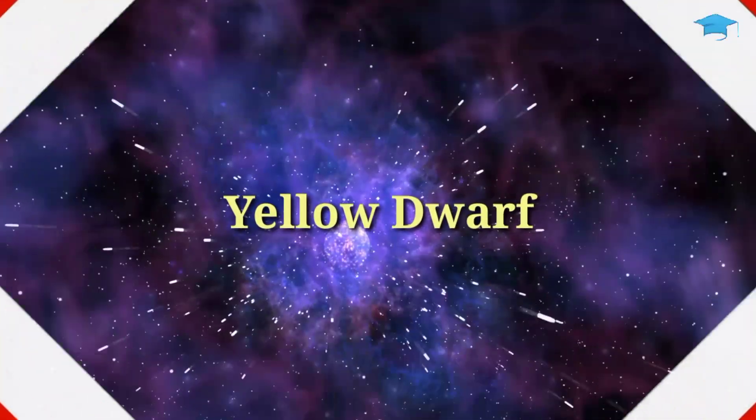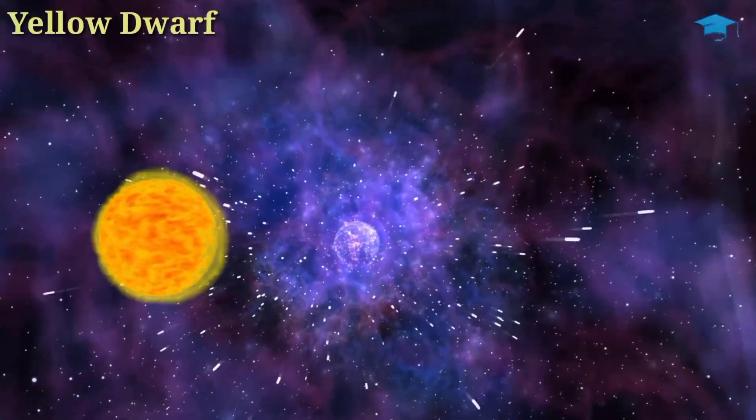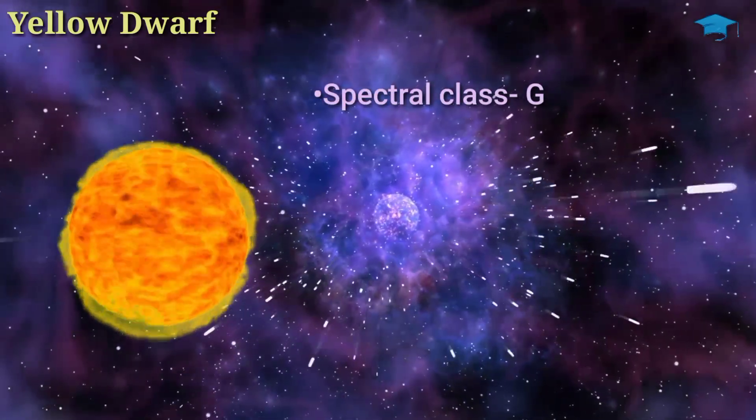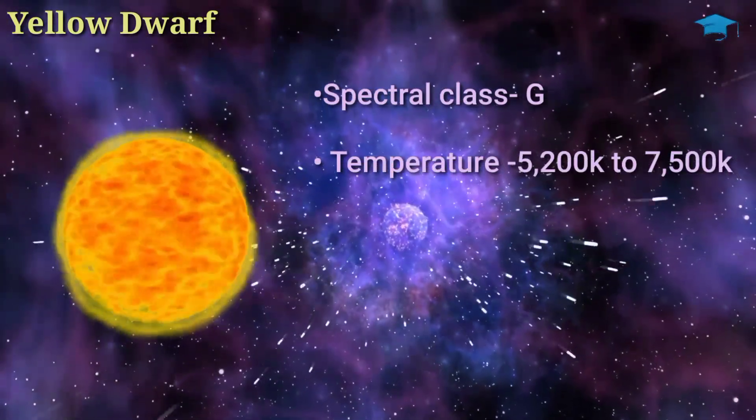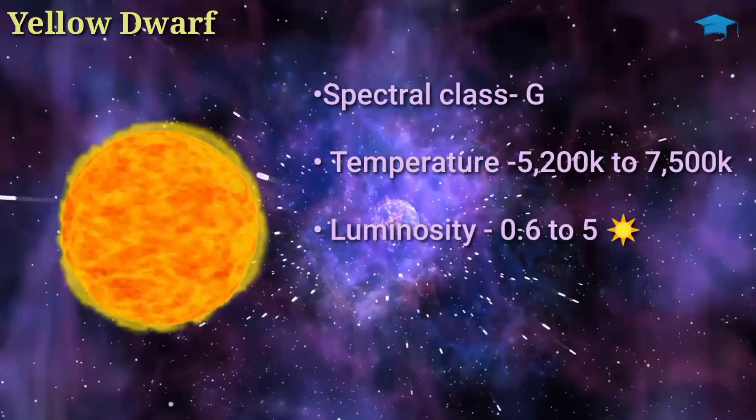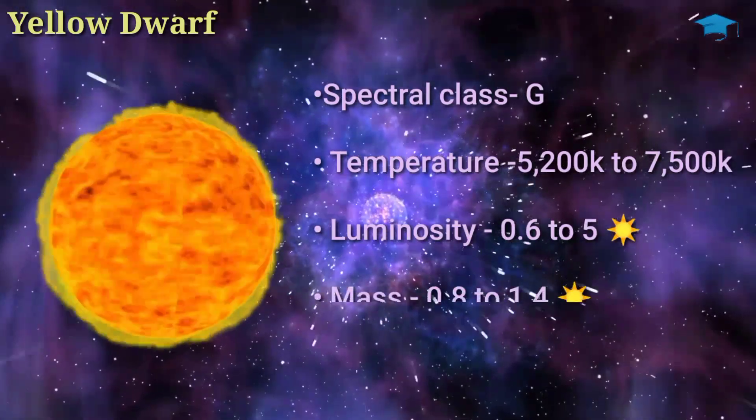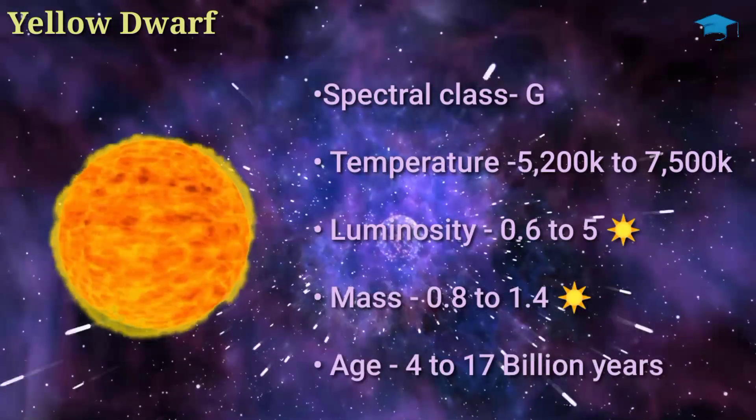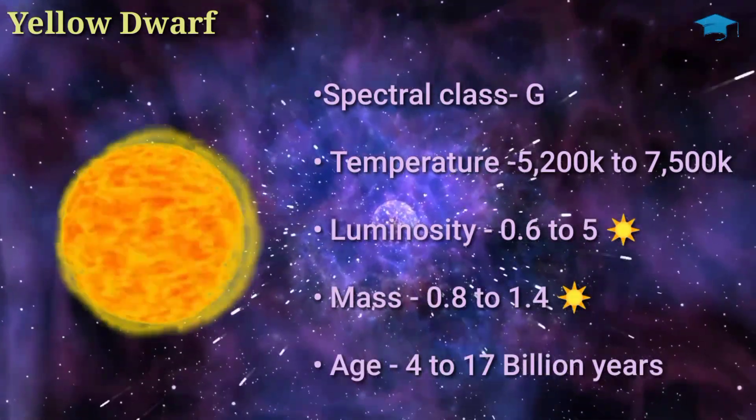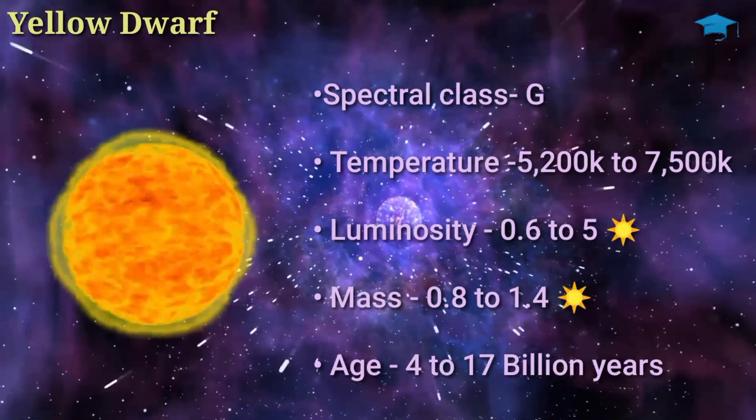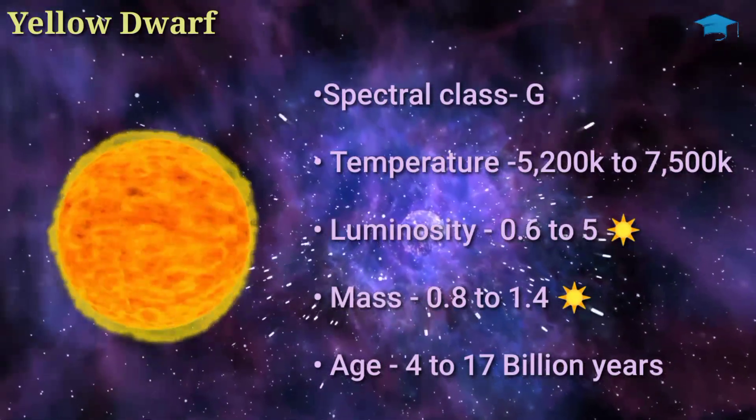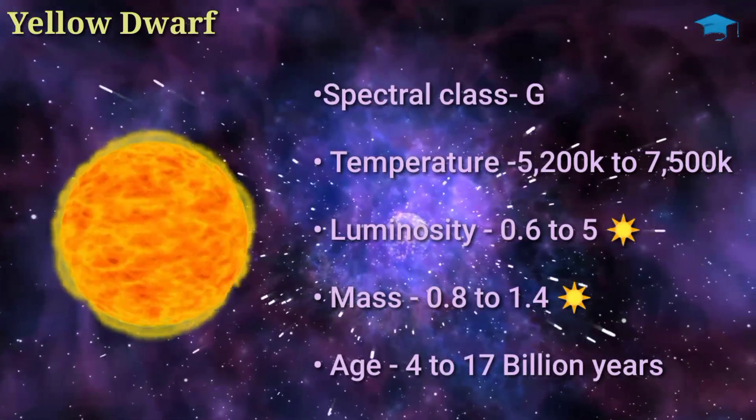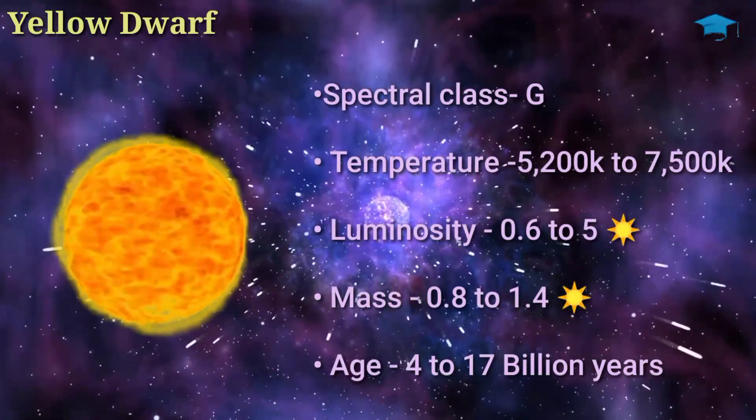The next one is a yellow dwarf. Yellow dwarfs have a 10% prevalence with a spectral type G. They have temperatures between 5,200 Kelvin to 7,500 Kelvin with luminosities of around 0.6 to 5 that of sun. Also they have a mass of 0.8 to 1.4 times the mass of sun. Our sun is also called a yellow dwarf because it is also a G type star and satisfies the condition for a yellow dwarf. Some other examples of yellow dwarf are Alpha Centauri and Tau Ceti.